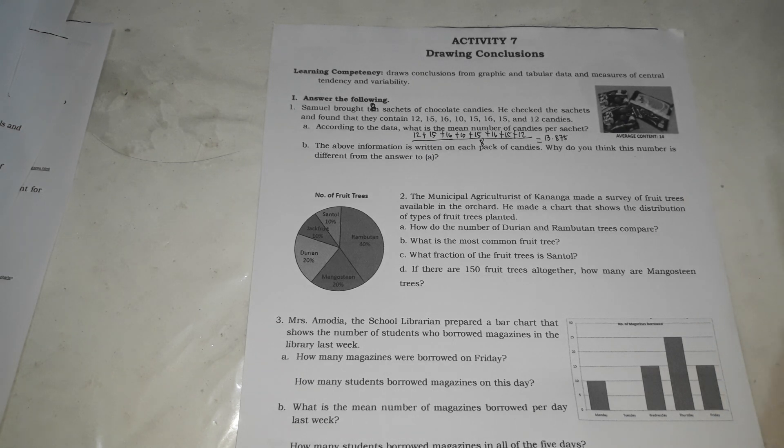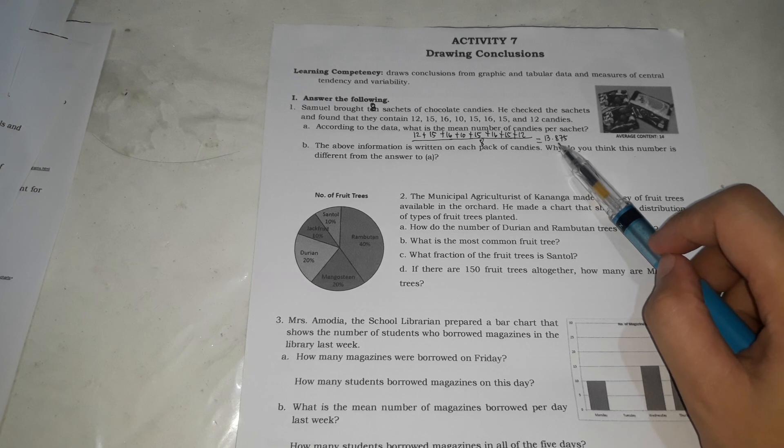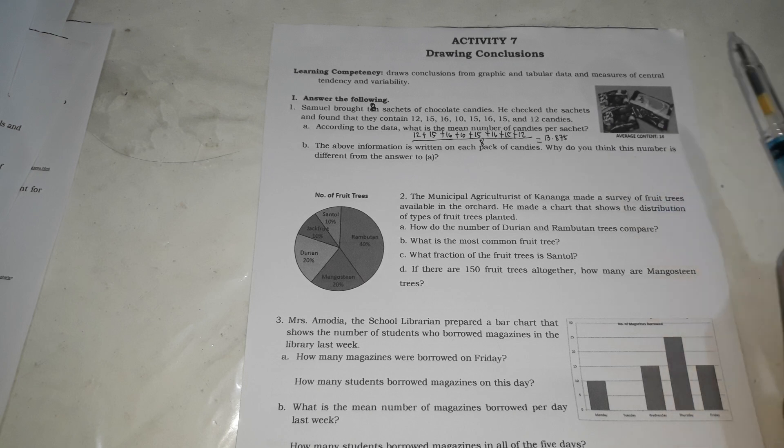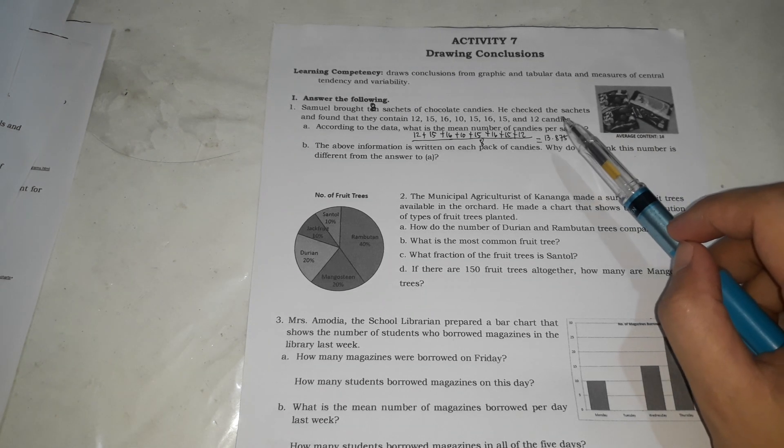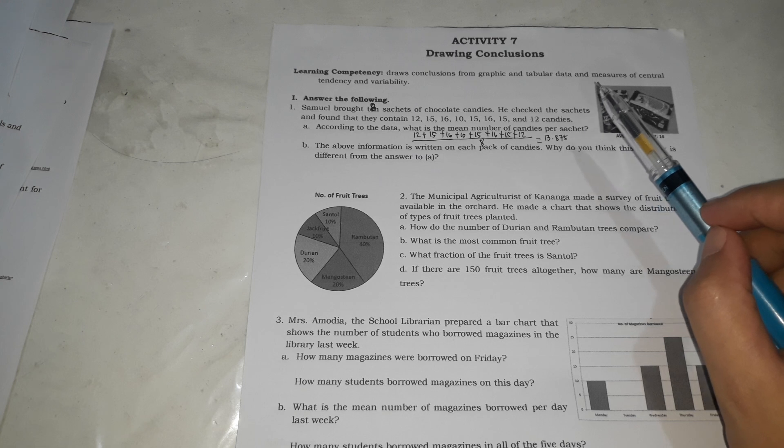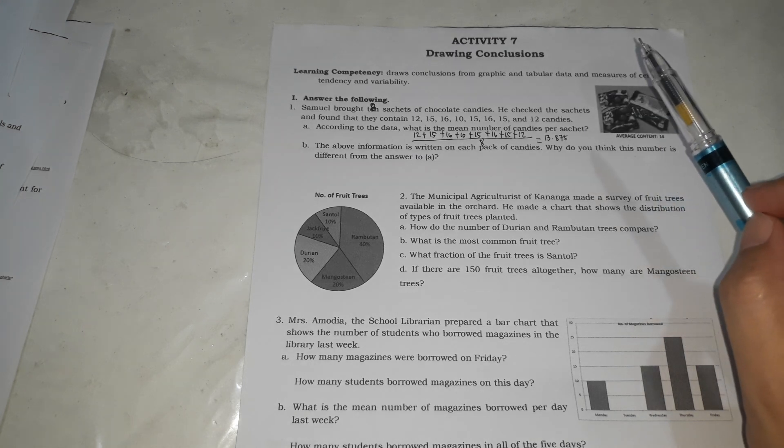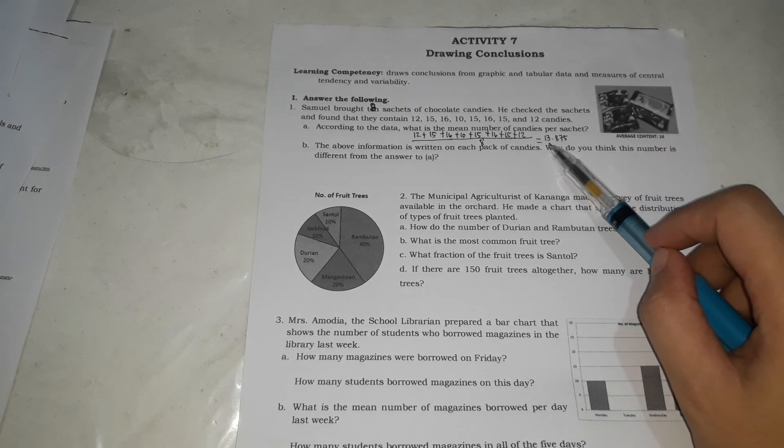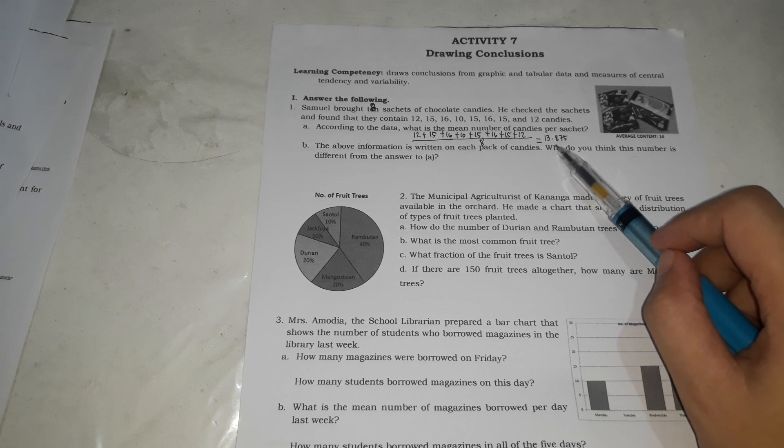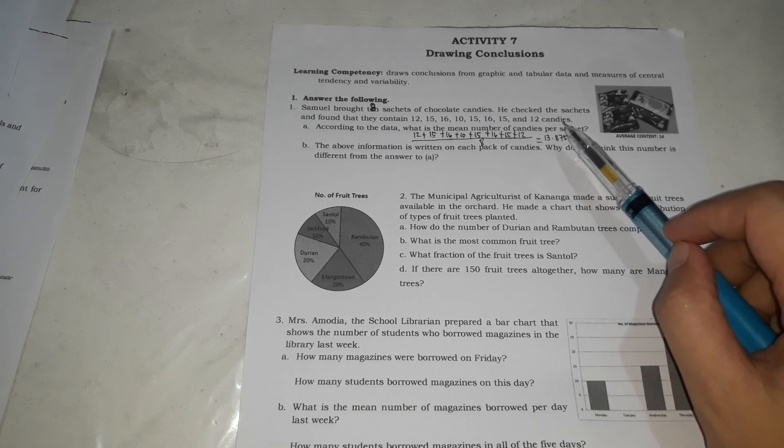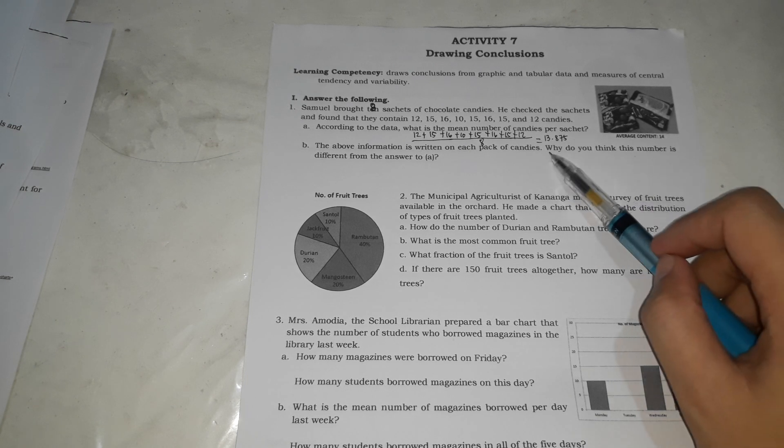There could be many answers. One could be, it's because, di ba number of chocolate candy. So, instead of 13.87, kasi wala namang 13.87 na candy sa loob ng isang pack. It's a whole number. So, instead of 13.87, ang ginawa nila is, ni-round off ito so that it will have a whole number. Instead of 13.875, they rounded it off, ginawa nilang 14. That's why the average content is 14. That's why they are different. However, if you round this off, ang sagot is pareho lang.